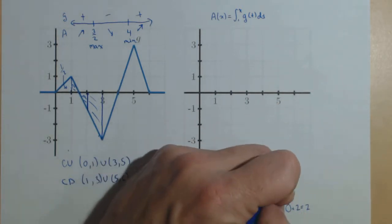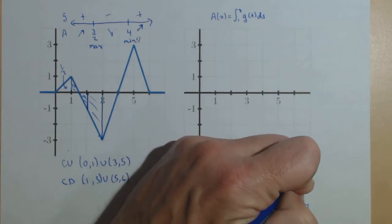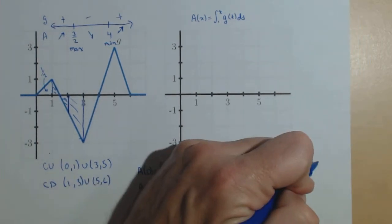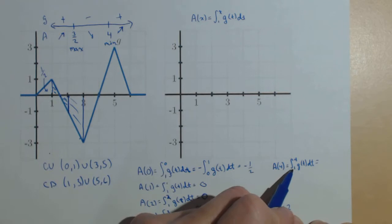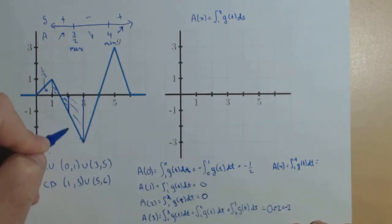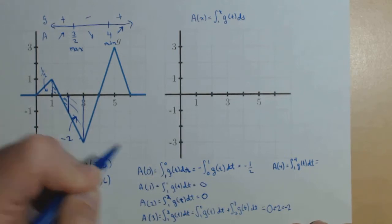So, we're going to continue this trend. A of 4 is the integral from 1 to 4 of g of t dt, but I already know that it's 2, not 2, excuse me, that should be plus a negative 2. This is below the x-axis, so it should be negative.